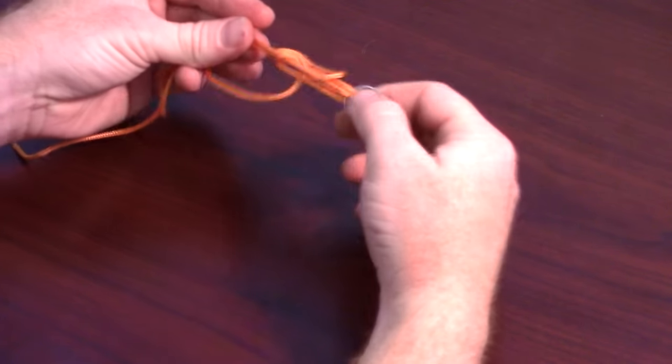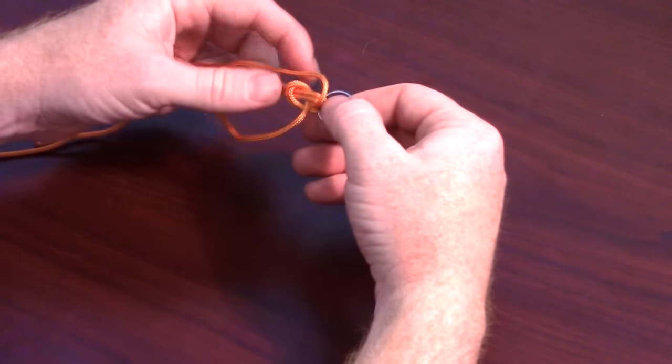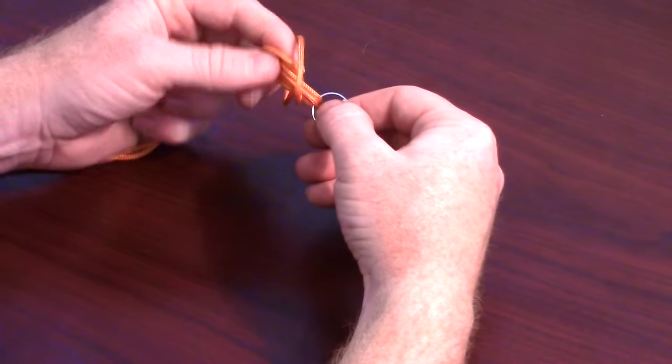Then take the tag end loop and pull it over the hook. Then pull it up over the knot while cinching the knot down.